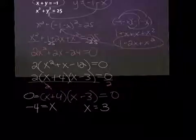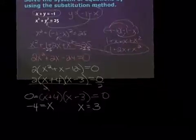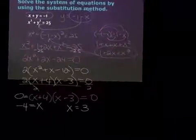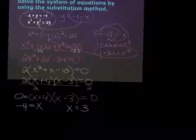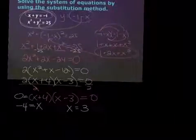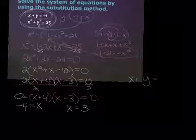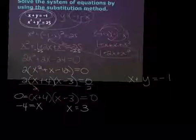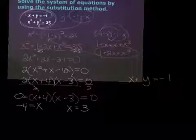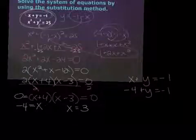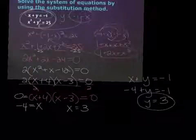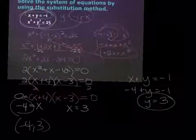Now I have to take both of those x values and plug them back in — I can plug them back into either equation. Because the first equation is linear, it's probably easier to solve by plugging back in there. So one at a time, I'm going to plug in my x values. I'll plug in negative four first. When x is negative four, y is three.